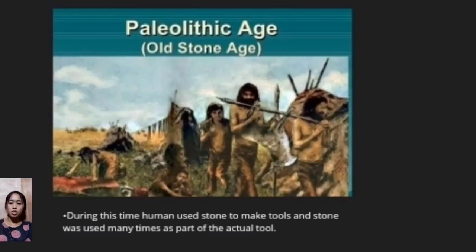The Paleolithic Age, or the Old Stone Age — during this time, humans used stone to make tools, and stone was used many times as part of the actual tool. The first stone tools were used to meet people's three basic needs of food, shelter, and clothing. These were difficult times; there were no stores to buy food, and people had to cooperate in small groups to make clothing and shelter.